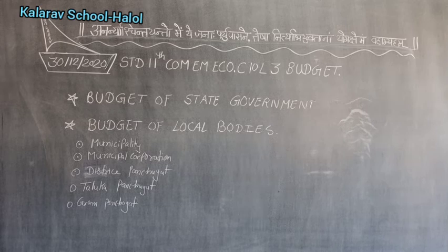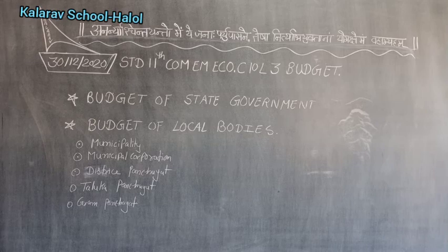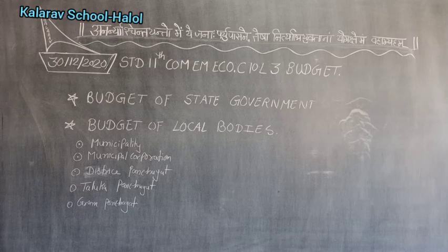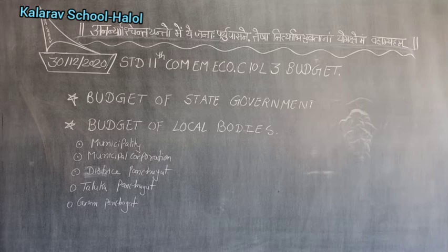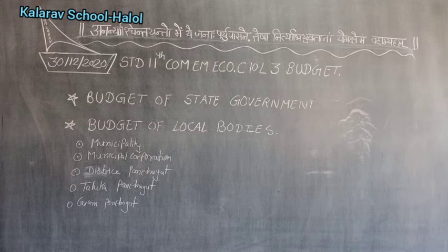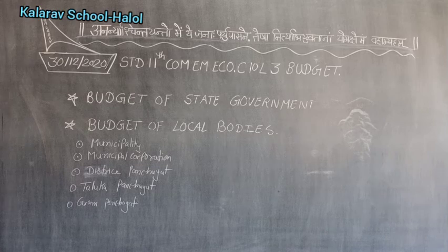Now the capital account of the state budget. On the income side: public debt including internal debt of the state, loans and advances from the central government, ways and means advances of projects, recovery of loans given to other governments in previous periods, and other capital income like proceeds obtained from disinvestment. On the expenditure side: capital expenditure on social services, capital expenditure on economic services, non-development capital expenditure on general services and administration, repayment of loans taken in previous periods, and other expenses like loans and advances to local governments.